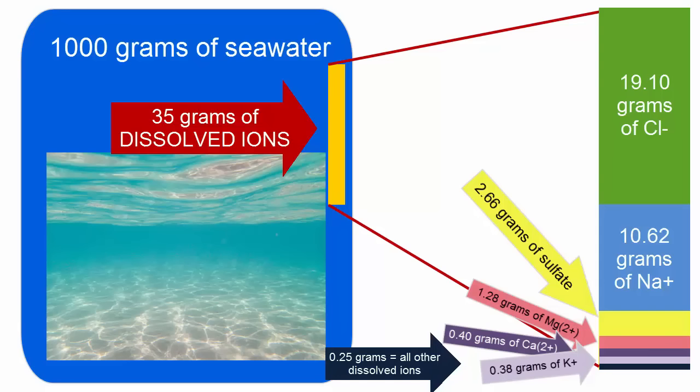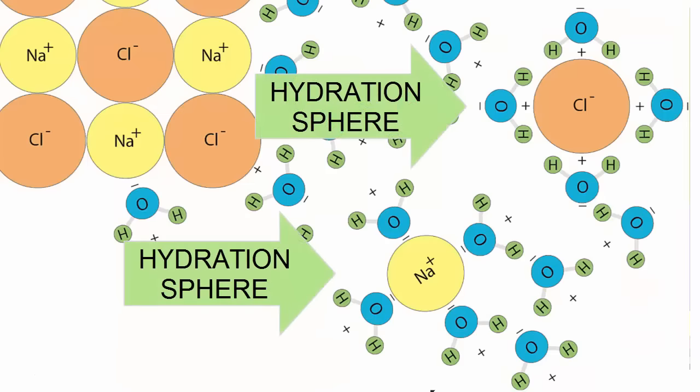We talked in last week's tutorials about how these ions are dissolved by water. Now they are present as ions, hydrogen bonded to water molecules that trap them in hydration spheres, so they can't rebond, form a solid, and settle out, which we call precipitation.